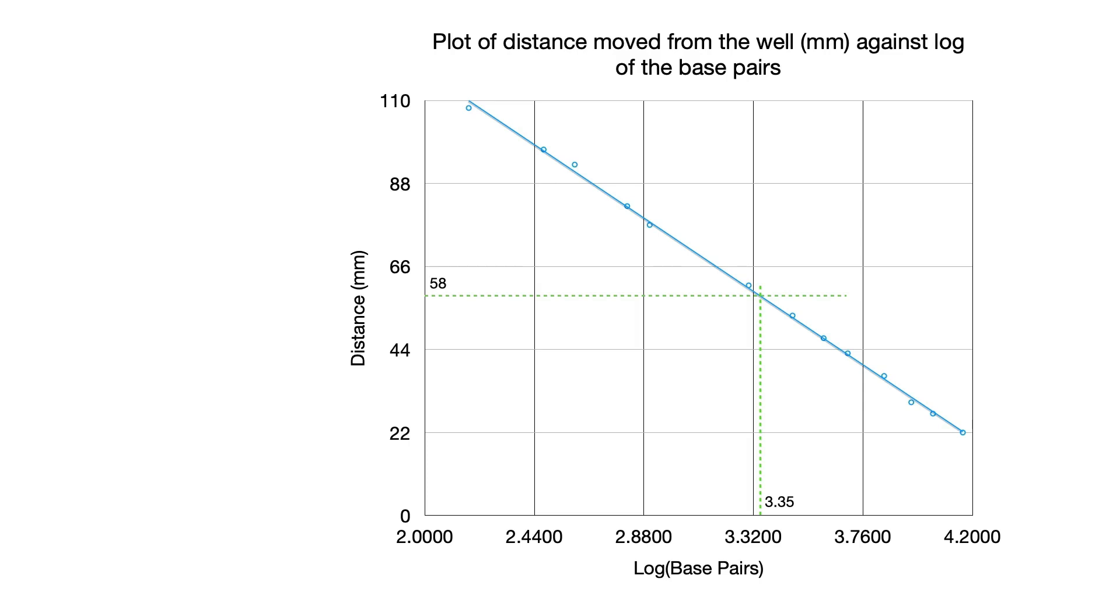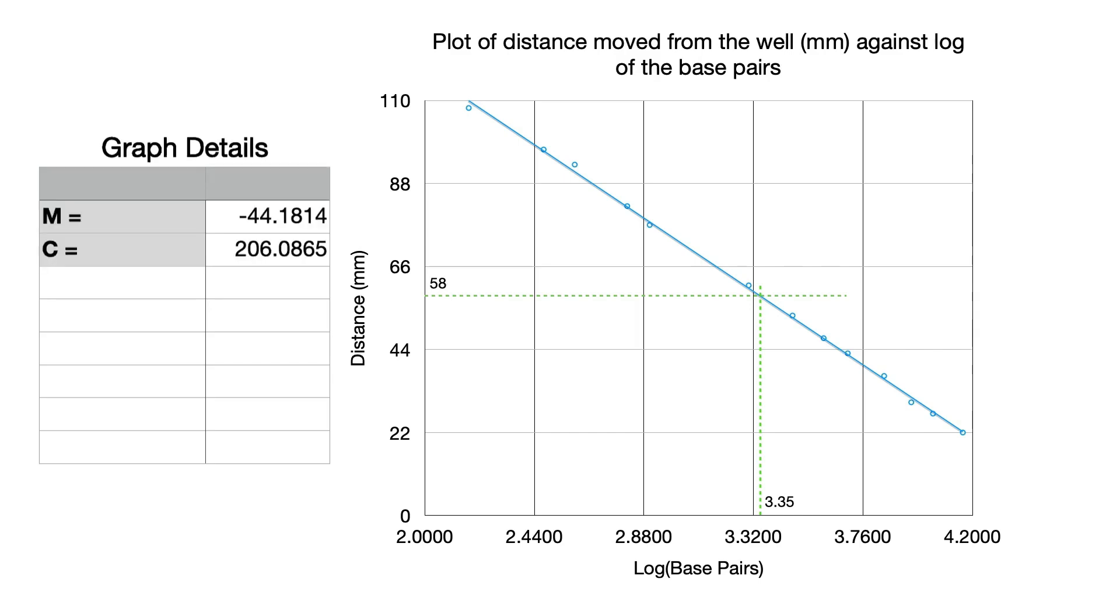Alternatively we can put the data into Excel and get Excel to calculate our gradient and our intercept on the y-axis. And when we do that we find our gradient is minus 44.1814 and our intercept is 206.0865.